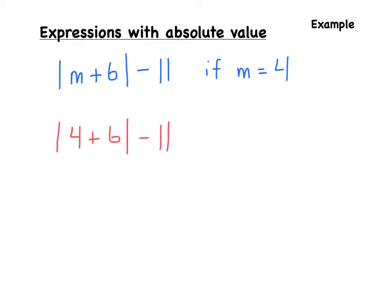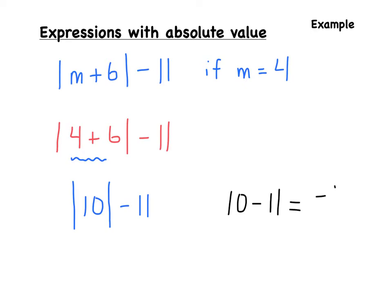We solve within the absolute value first: 4 plus 6 is equal to 10. What is the absolute value of 10? Remember, absolute value is always positive because we're talking about distance — distance is never negative. So the absolute value of 10 is 10. Then we have 10 minus 11, which is equal to negative 1.